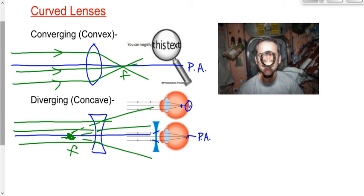When I get older — when you guys get older — you'll almost certainly need reading glasses. The muscles in the eye weaken to the point where they can't change the shape of the lens well enough. The rays of light will then converge behind the retina. So a converging lens placed in front of the eye causes the rays to come together quicker and converge on the retina.